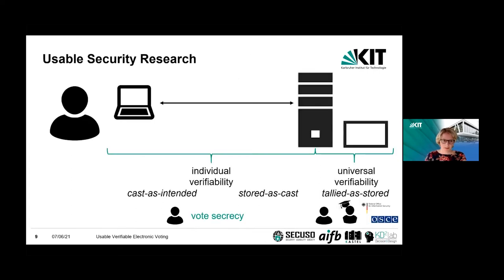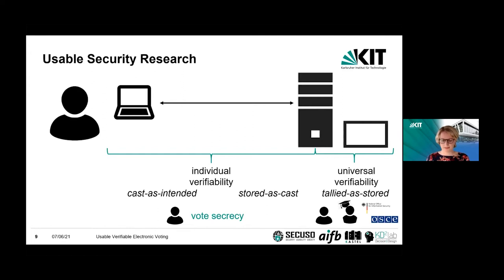Today we want to talk about usable security research in the area of end-to-end verifiable systems. It's important to understand that individual verifiability is something the voter needs to conduct, because otherwise vote secrecy would not be guaranteed. Universal verifiability can be done by everyone — the voter, some experts, or some trustworthy institutions. So if you want to look into usability, it's first of all important that individual verifiability is usable for the voter.